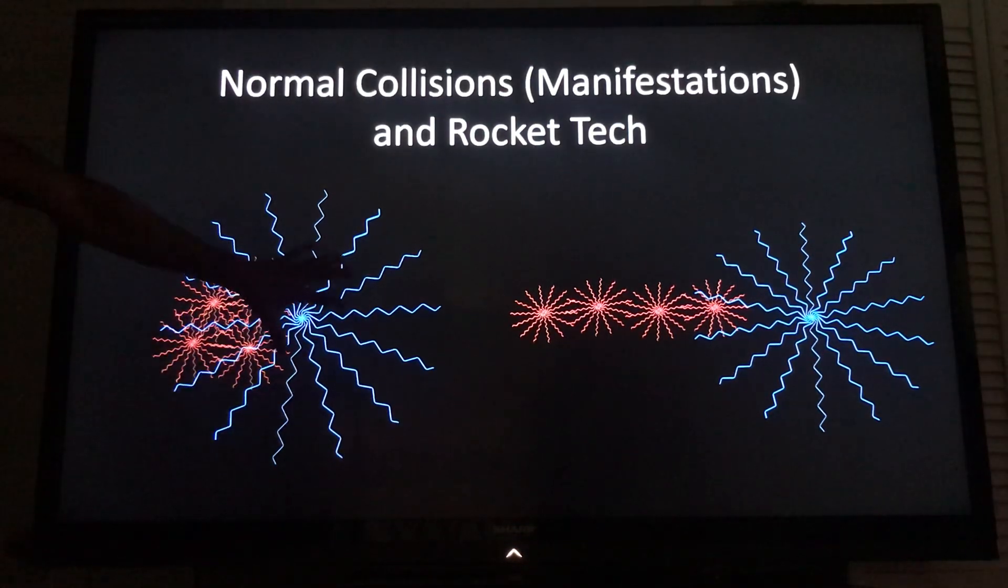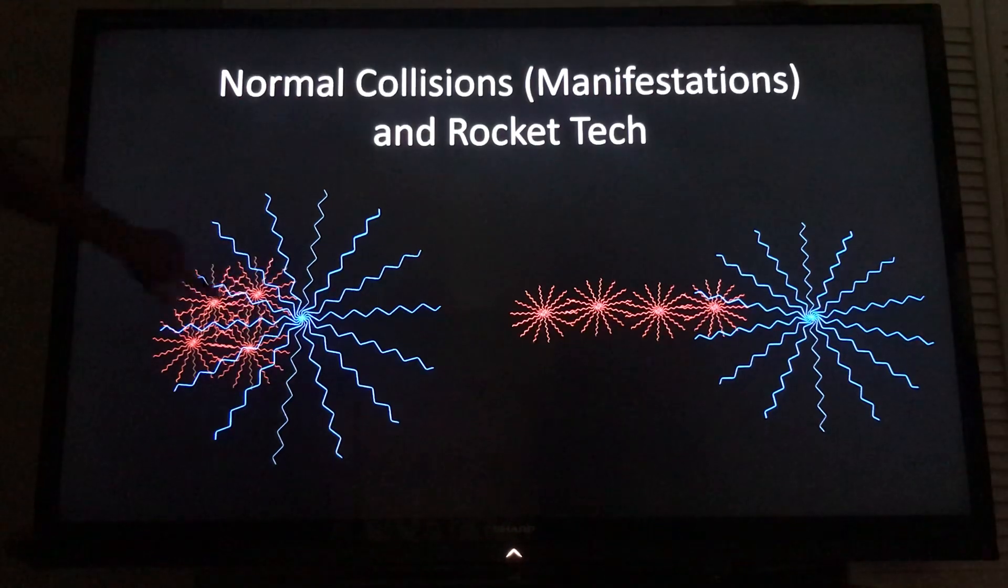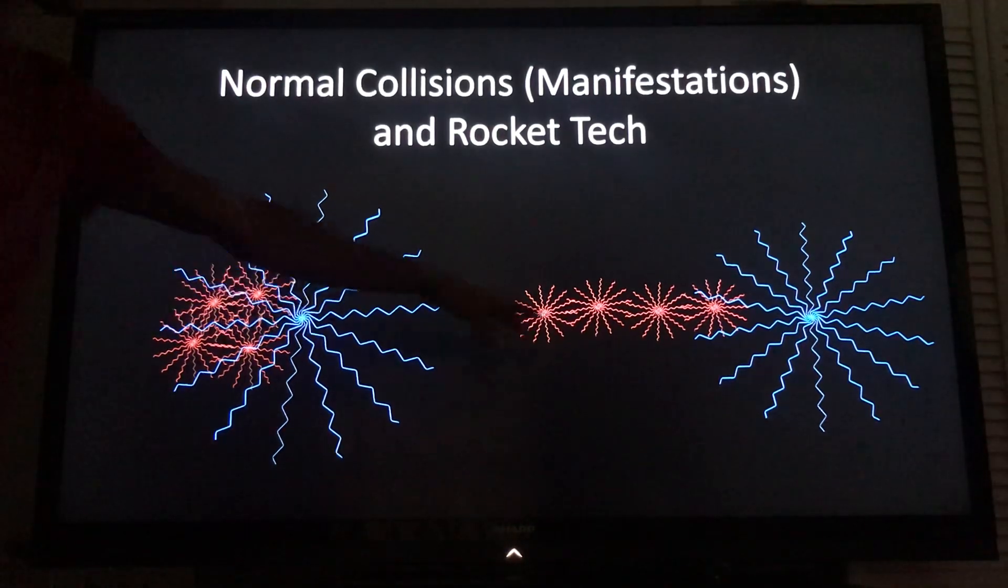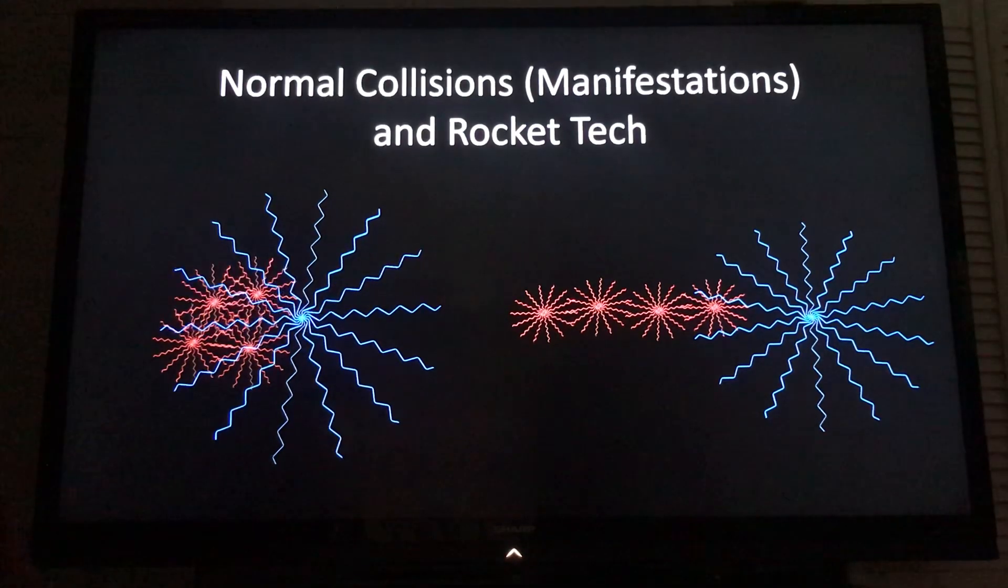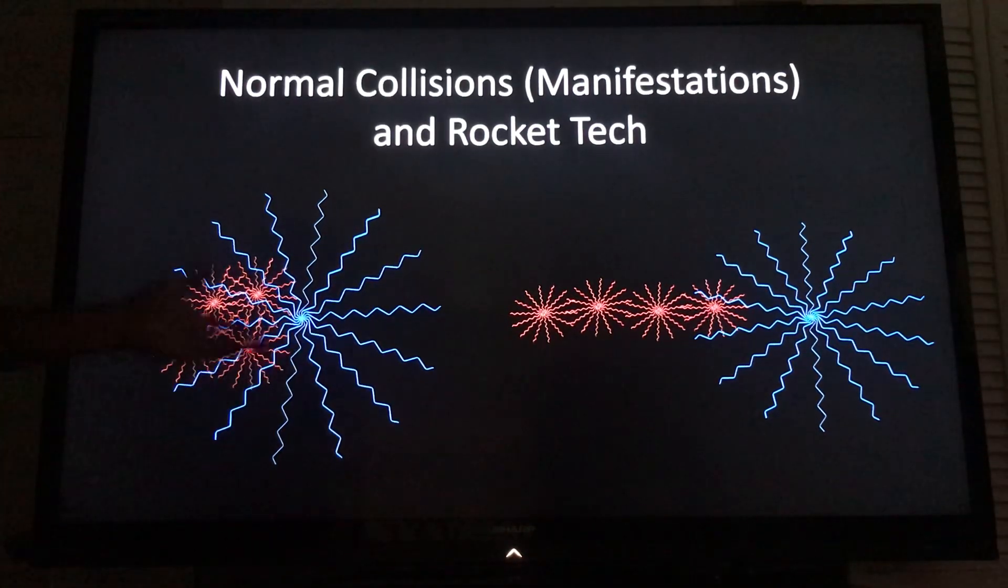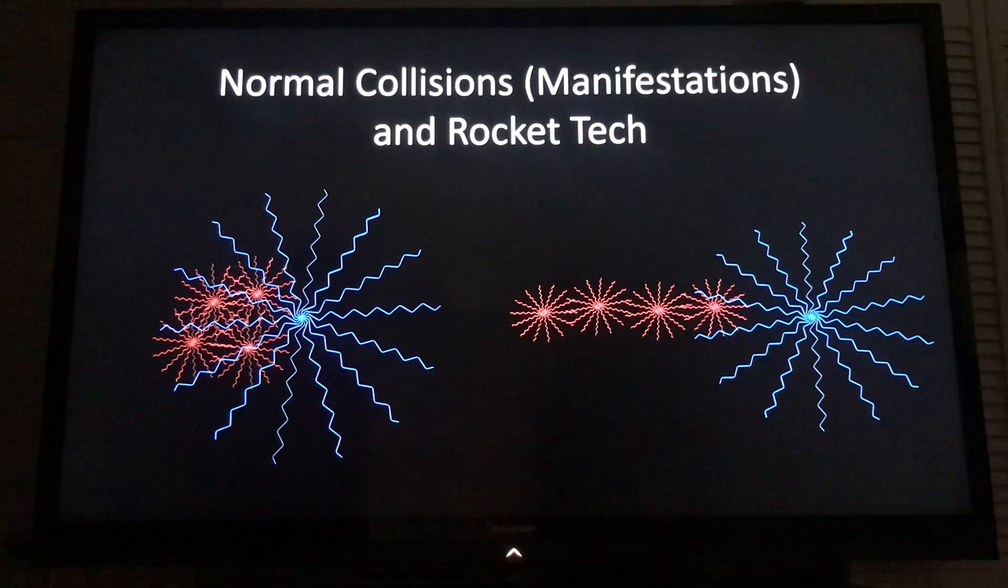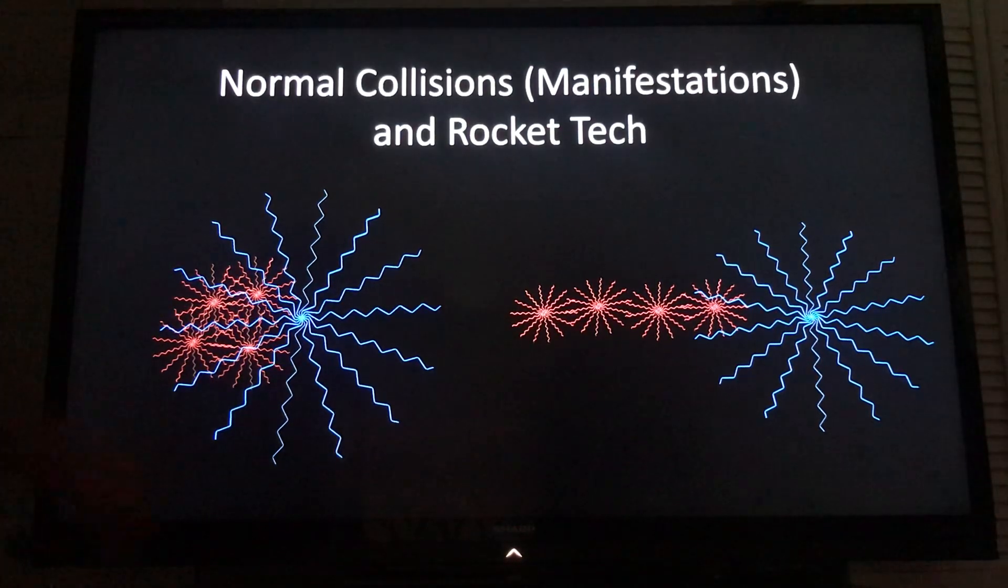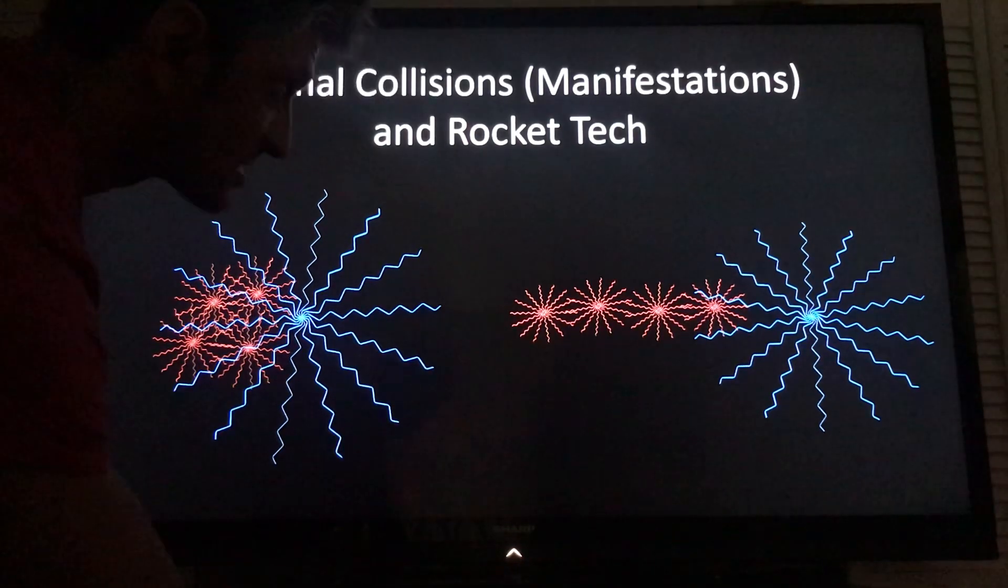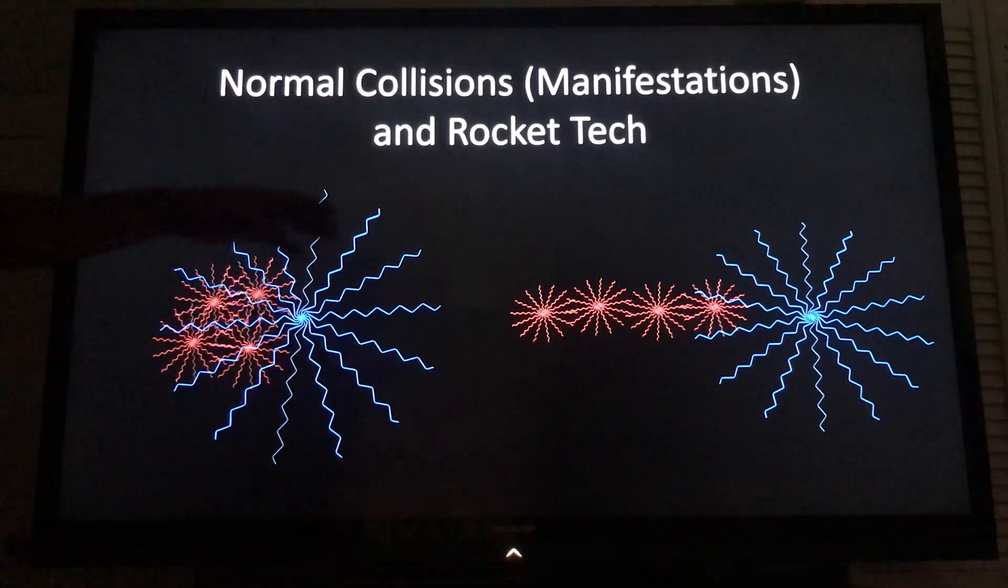So you could say that's normal rocket technology, normal collisions, manifestations and rocket tech. Here you have a rocket filled with fuel, these bits of matter, and what it does is it shoots out the matter. So the energy balance, one half mv squared, one half mv squared, you get your mass going one direction, the other mass goes the other direction. Common collision, you feel momentum because you're only working with the now.